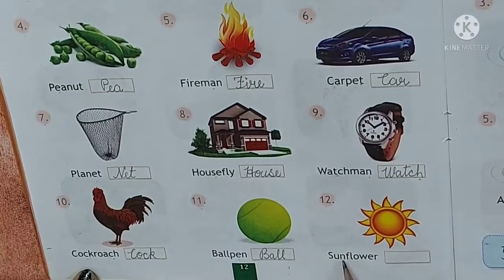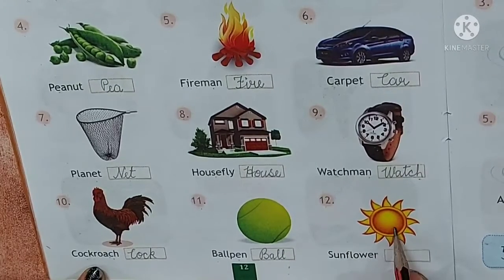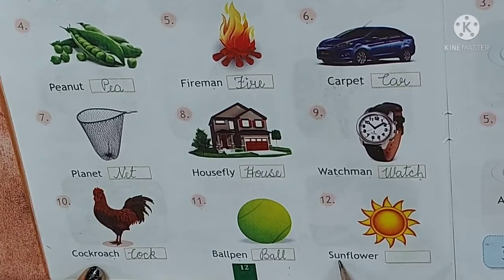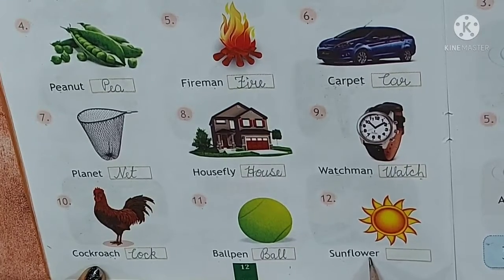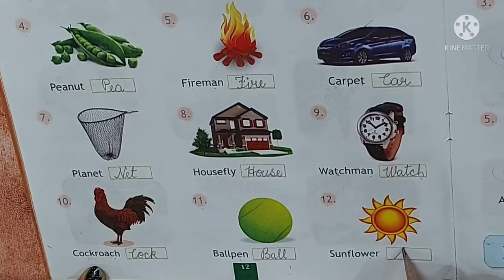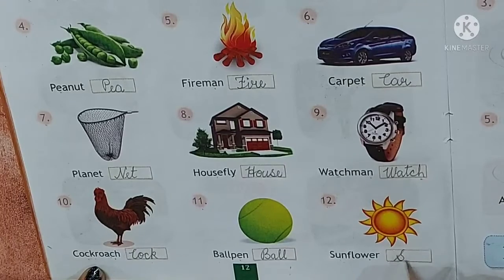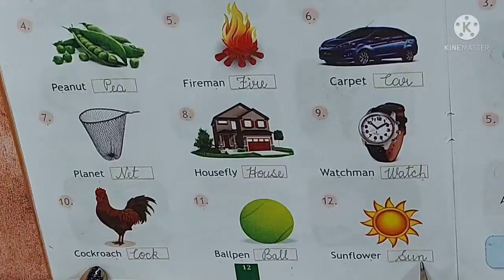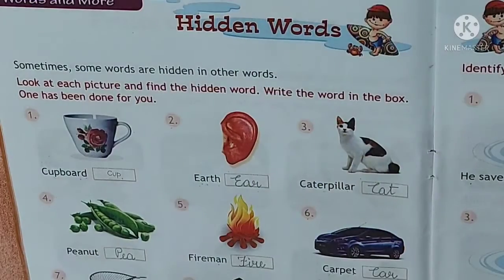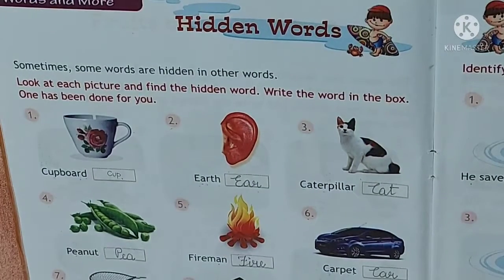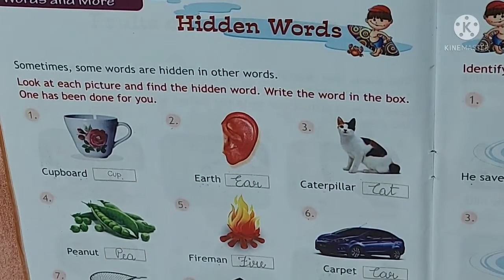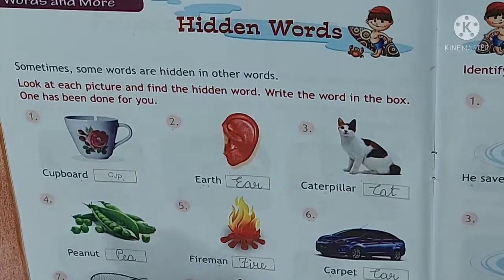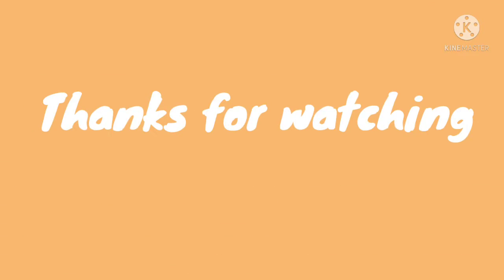Number 12: sunflower. What is this? Sun. In the word sunflower, the word sun is hidden here. S-U-N — sun. So students, you have to fill in number 12 in your GK book and send it for correction. Thanks for watching.